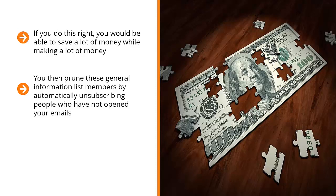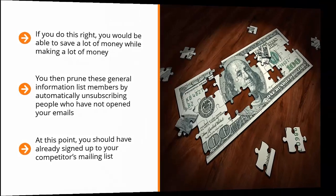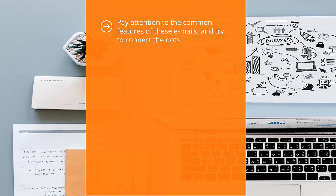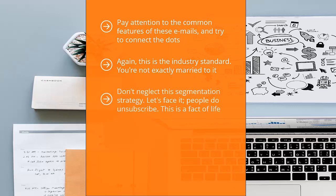Be aware of your competitor's industry standard list segmentation. At this point, you should have already signed up to your competitor's mailing list. You should already know the topics they send updates on and be very familiar with the content of their updates. Pay attention to the common features of these emails and try to connect the dots. How do they segment their list members? Which of the general strategies described above are they using? Once you are clear on their segmentation strategy, you might want to start there. This is the industry standard — you're not married to it. You can change it up later and make improvements based on how your list behaves.